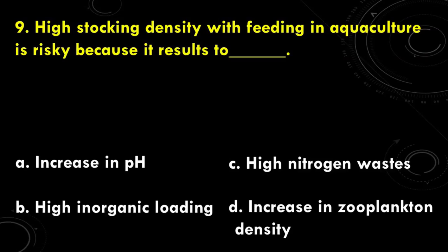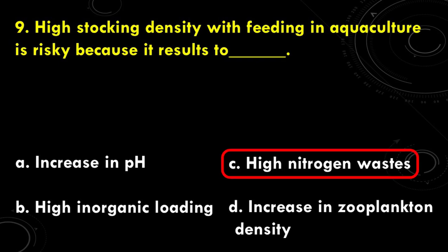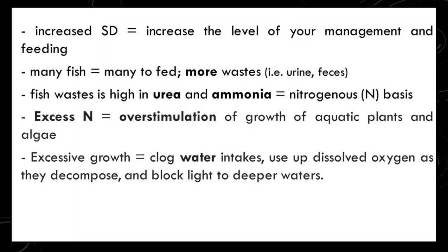High stocking density with feeding in aquaculture is risky because it can result in: A. increase in pH, B. high organic loading, C. high nitrogen wastes, and D. increase in zooplankton density. The answer is C, high nitrogen wastes. When stocking densities are increased, more feeds are given, thereby increasing wastes such as urine and fecal matter. Fish wastes are high in urea and ammonia, which are nitrogenous. Excess nitrogen in water may result in overstimulation of growth of aquatic plants and algae, which may clog water intakes, use up dissolved oxygen as they decompose, and block light to deeper waters.